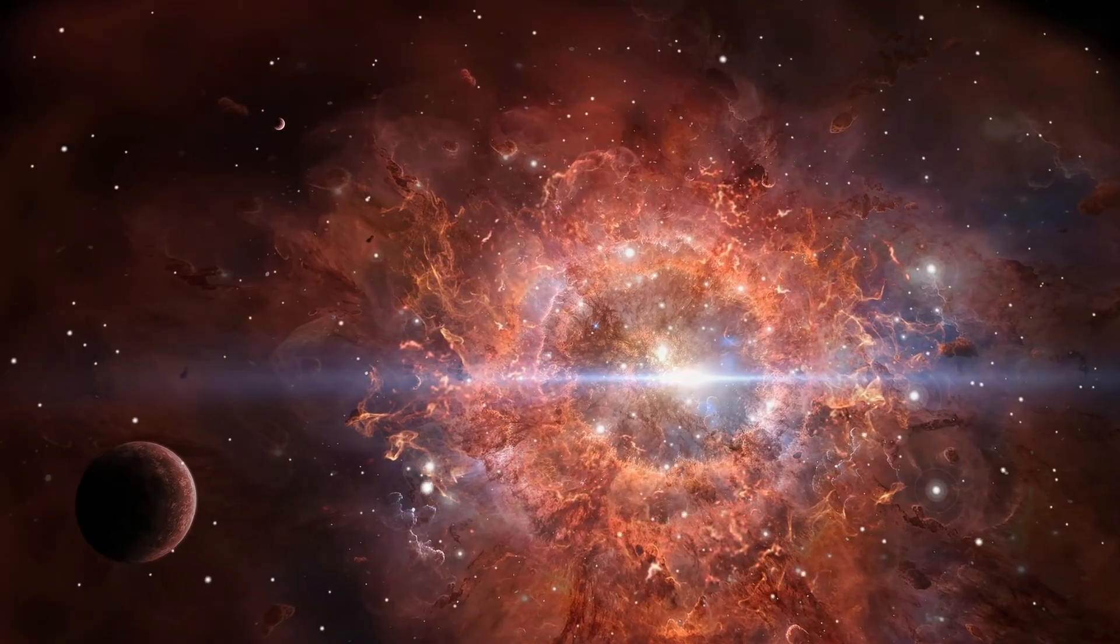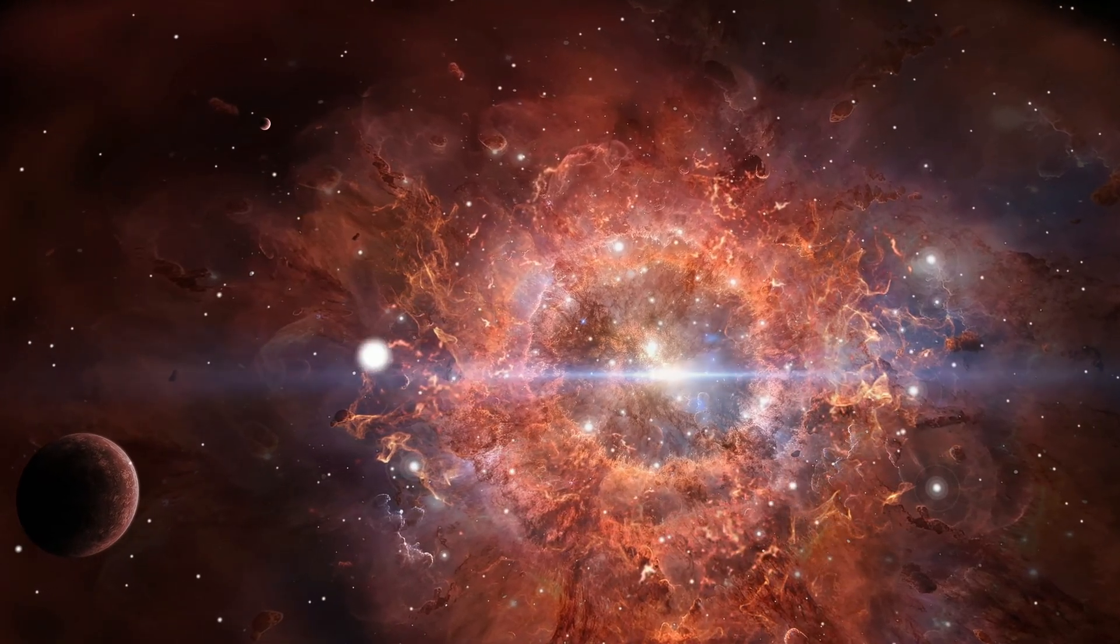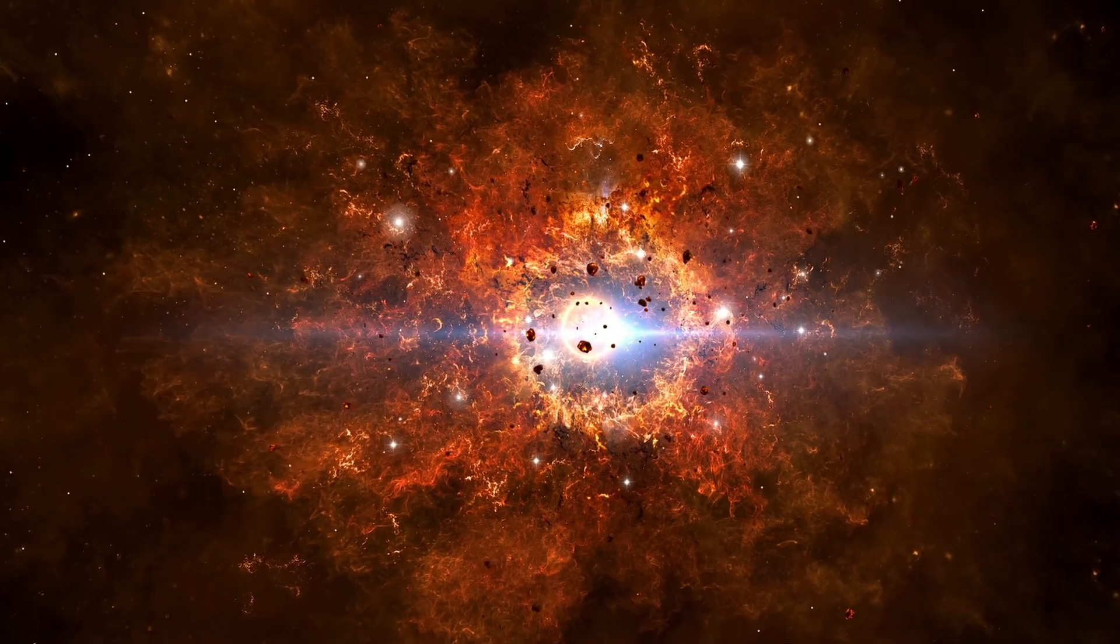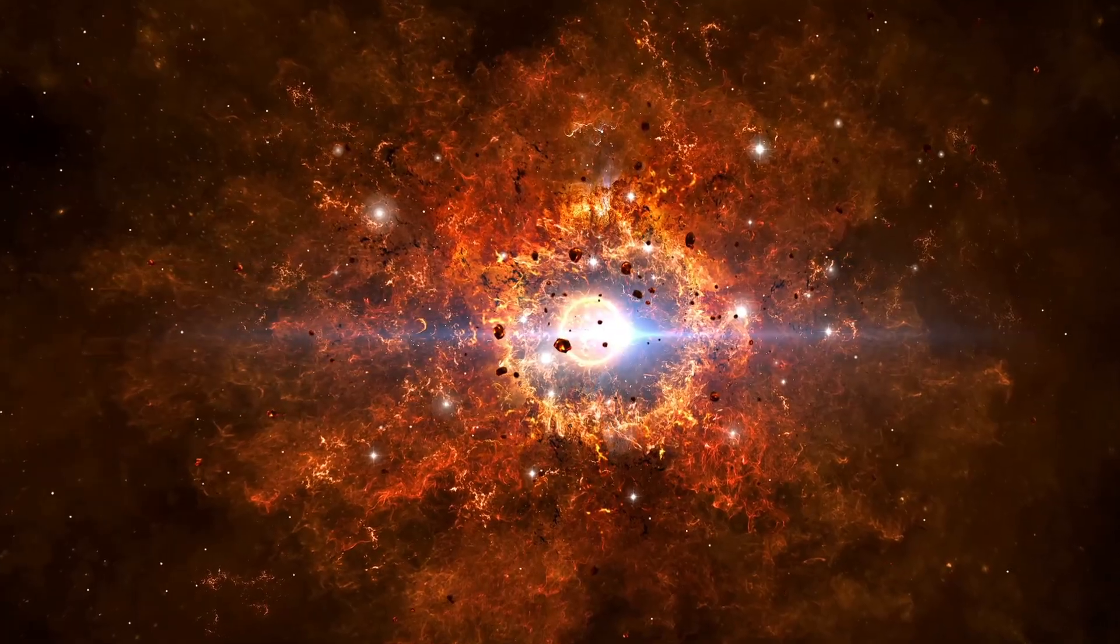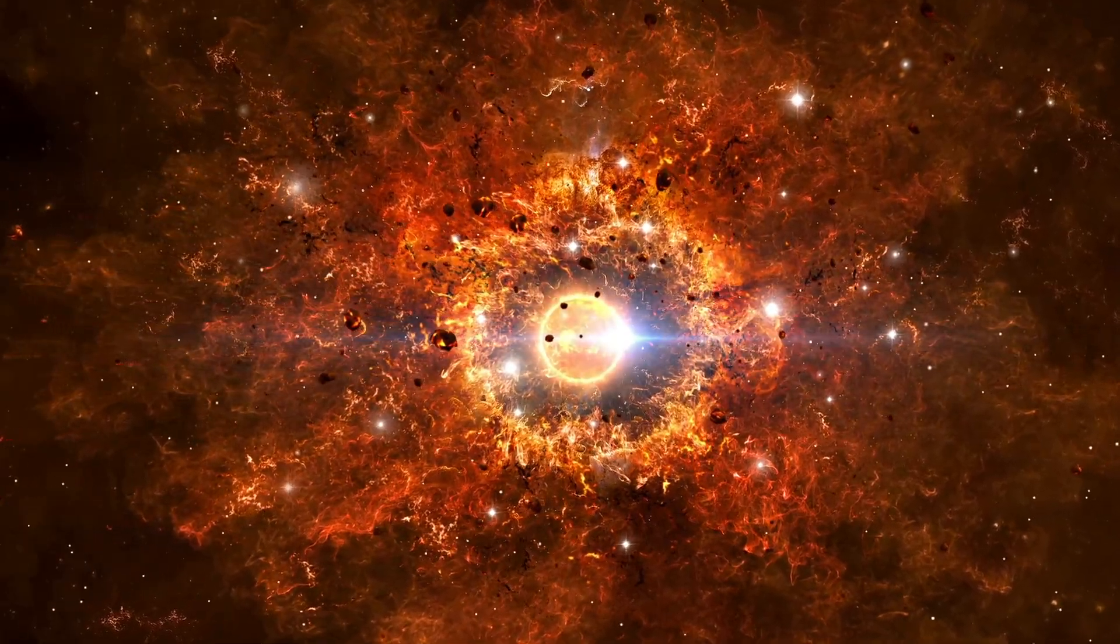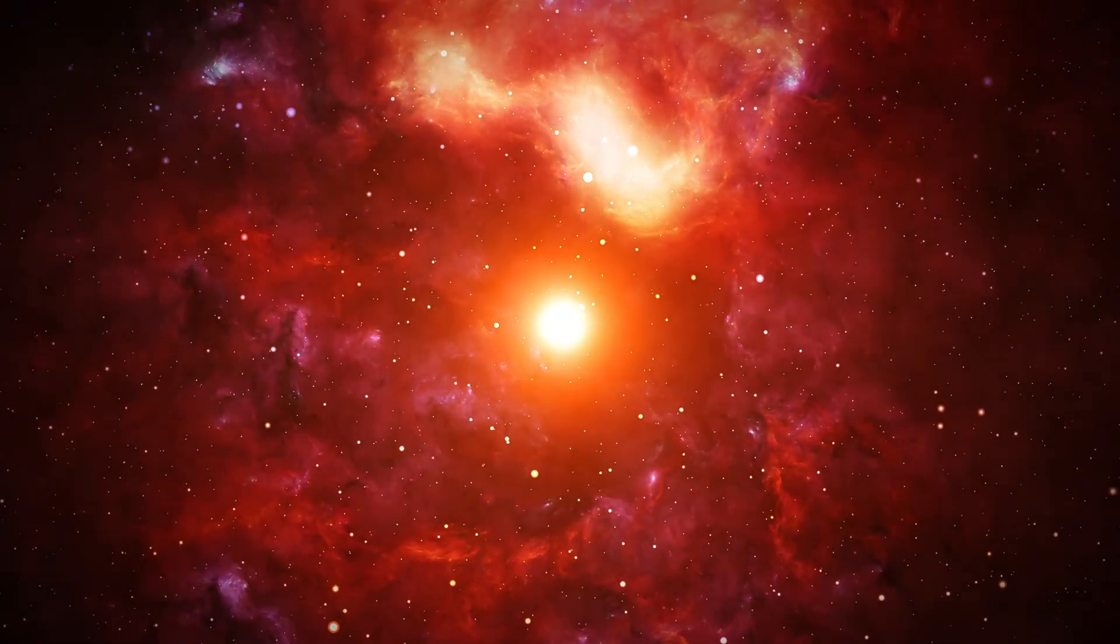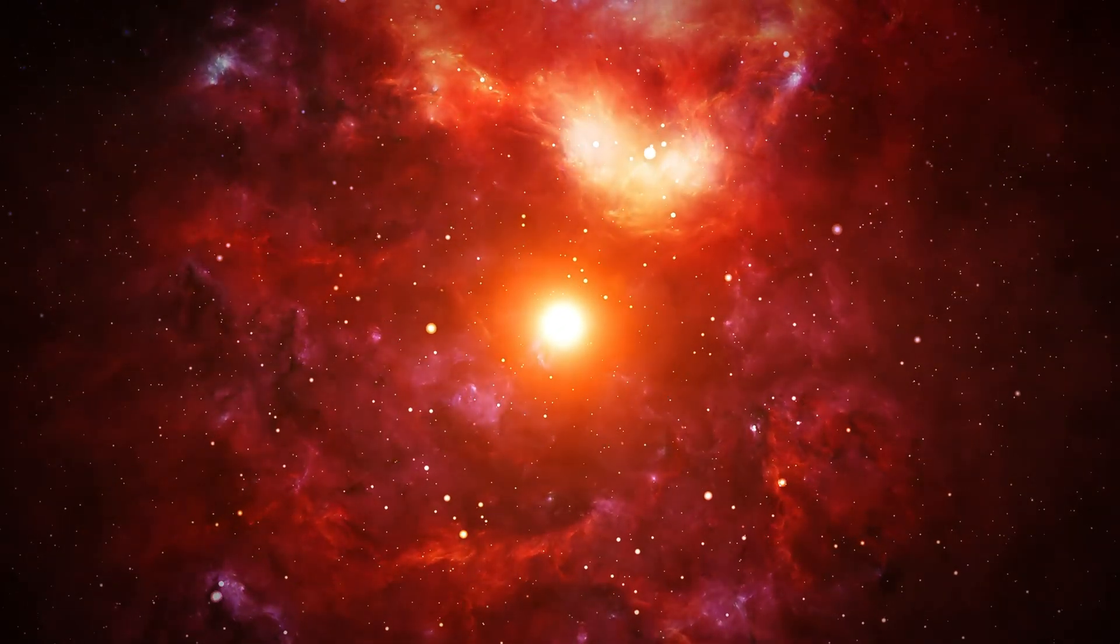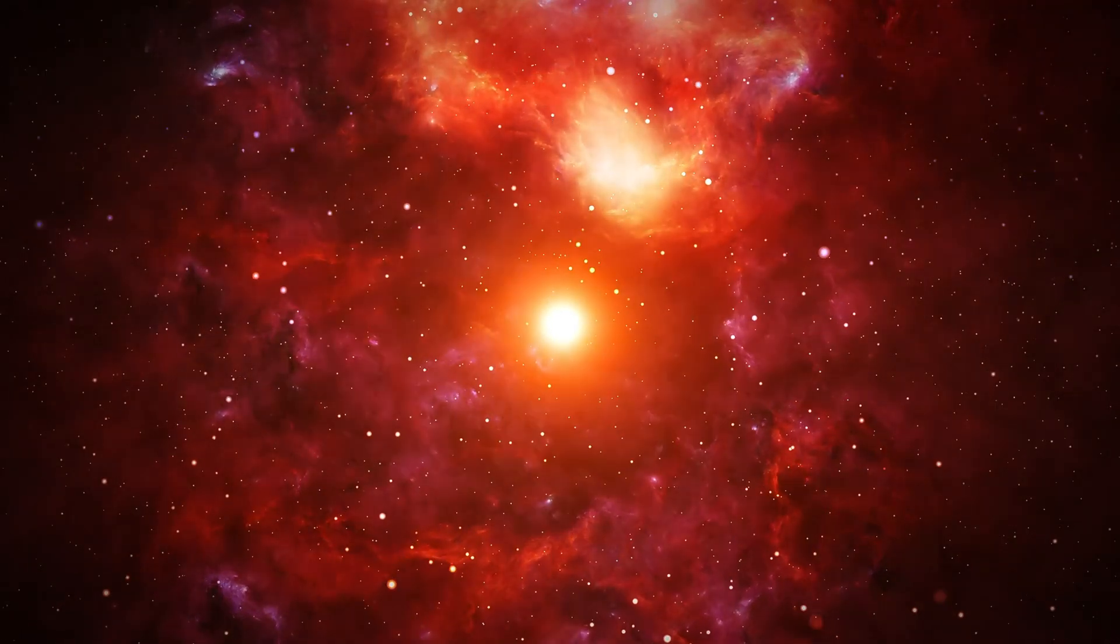We've talked about how big black holes can get. But what about the opposite? Can black holes shrink? Yes, through a slow, ghostly process called Hawking radiation. Black holes radiate tiny amounts of energy. As they do, they lose mass. Small black holes evaporate fast. Large black holes evaporate slowly. Very slowly.